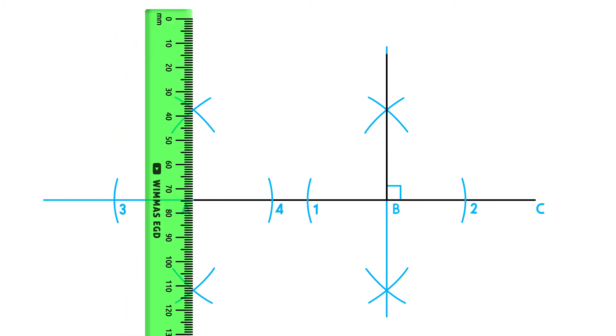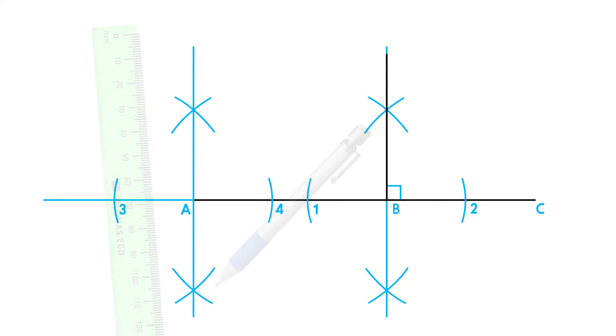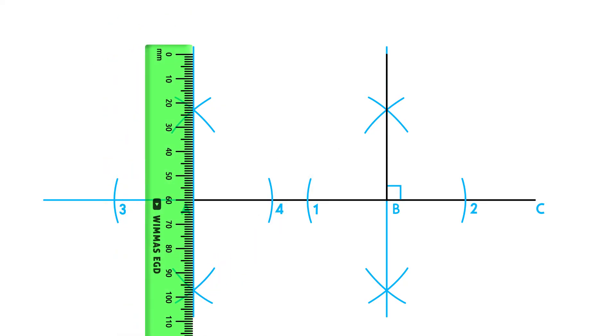Place your ruler on the two intersections and draw your perpendicular bisector and then draw your perpendicular line according to the specification.